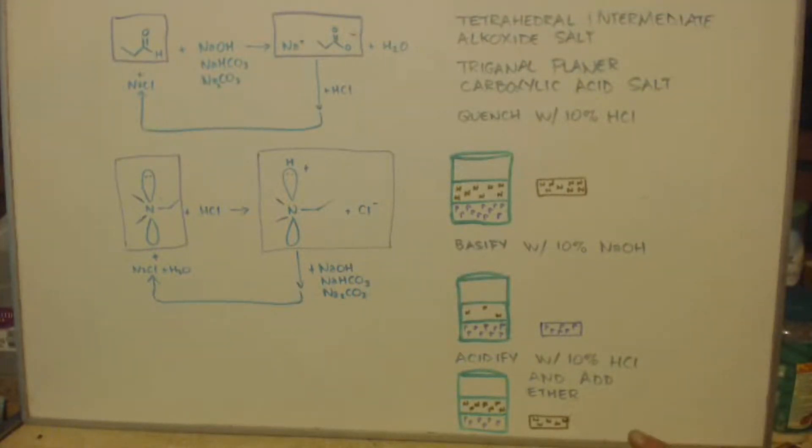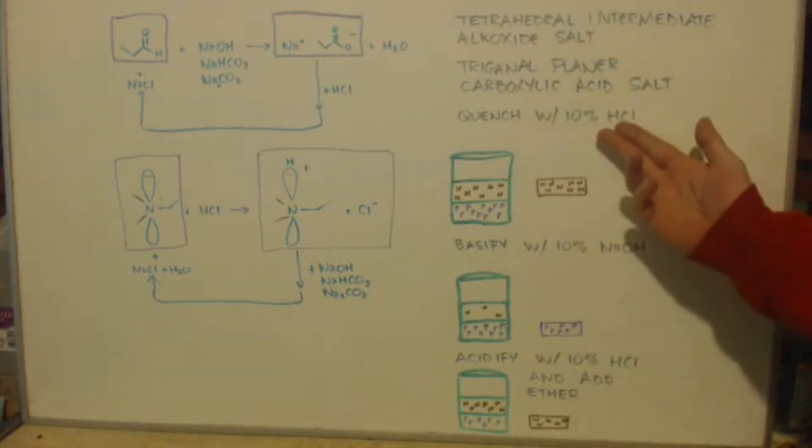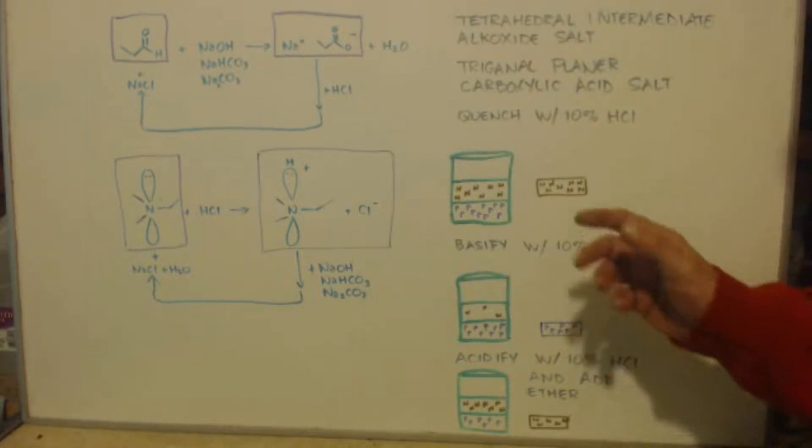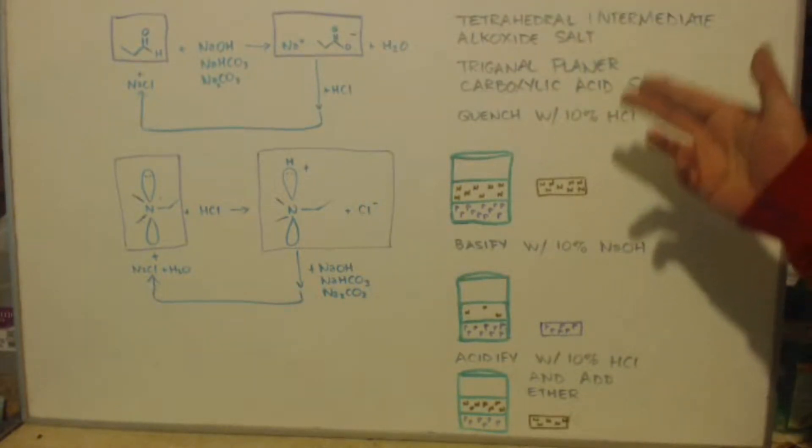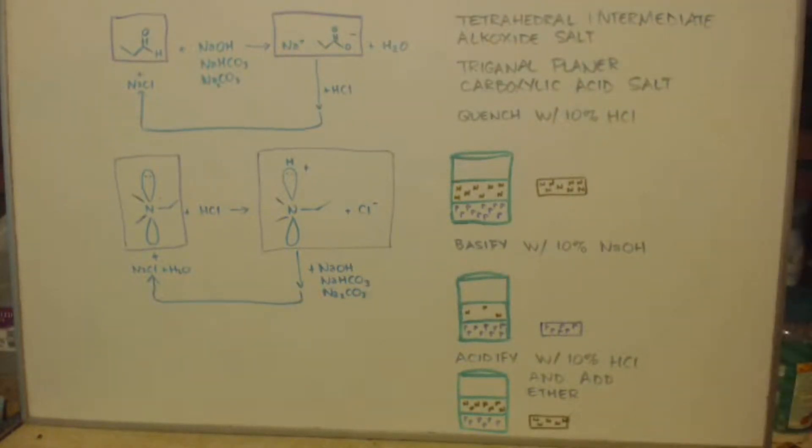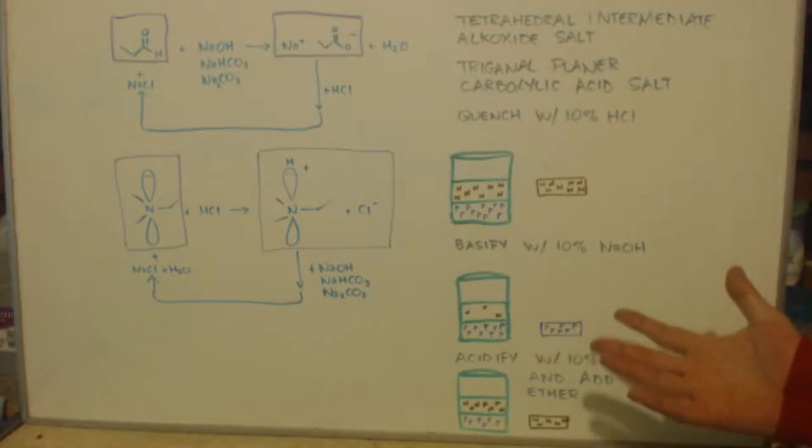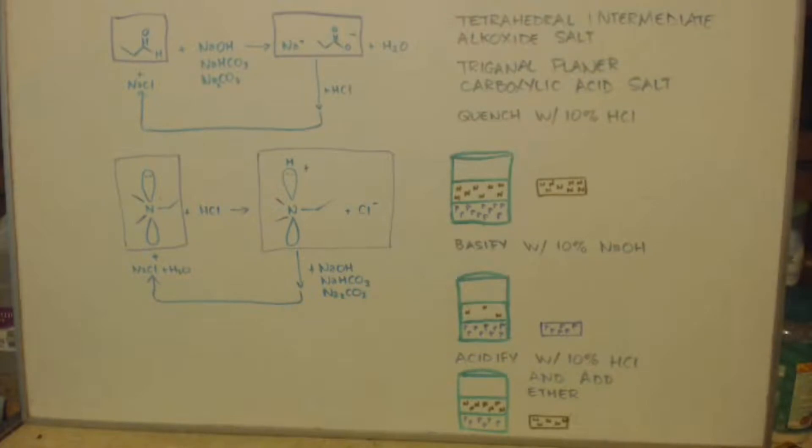When you get done with the Grignard reaction, no matter which salt you made, you quench it with HCl, right? Why do you do that? This is why. Well, first of all, the salt is a weird salt. It's a magnesium bromide salt. Nobody wants that. The second reason is because you want to purify it. There's a lot of impurities in there. There's the ethyl bromide that didn't react. There's non-polar stuff. There's polar stuff. So you want to get rid of that.